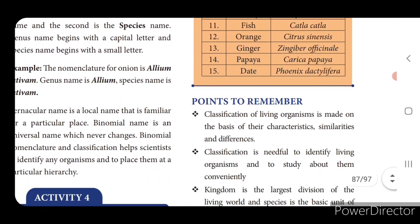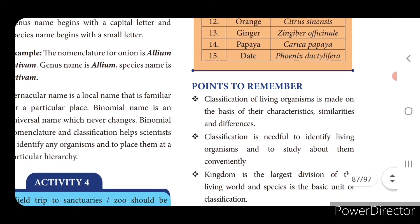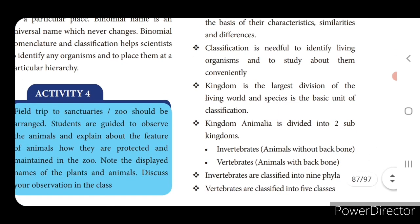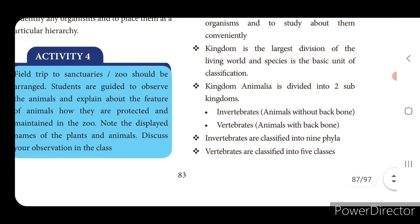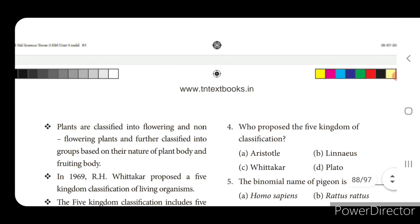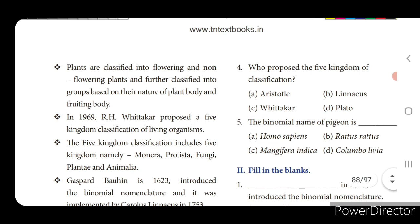Let us conclude this lesson with points to remember. Classification of living organisms is made on the basis of their characteristics, similarities and differences. Classification is needed to identify living organisms and to study about them conveniently. Kingdom is the largest division of the living world and species is the basic unit of classification. Kingdom Animalia is divided into two sub-kingdoms: invertebrates (animals without backbone) and vertebrates (animals with backbone). Invertebrates are classified into nine phyla and vertebrates into five classes. Plants are classified into flowering and non-flowering plants, further classified based on nature of plant body and fruiting body.